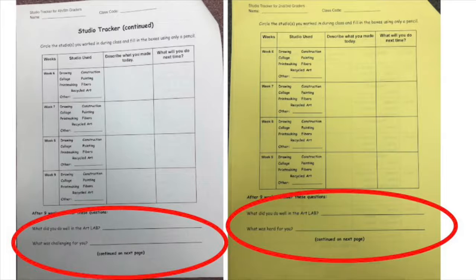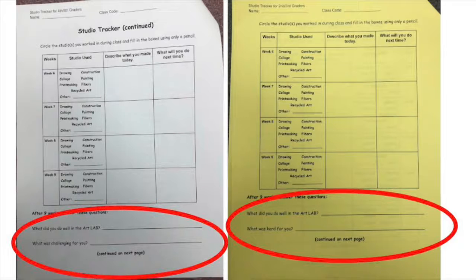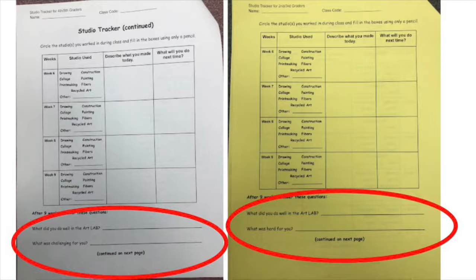Open your studio tracker to the back of the first page. There, at the bottom of the page, will be two questions you will need to answer. The first question is: what did you do well in the Art Lab? Your answer might be about a specific artwork, studio, technique, studio habit of mind, or a behavior choice. Think of one thing that is an area of strength for you.